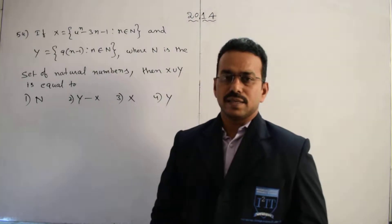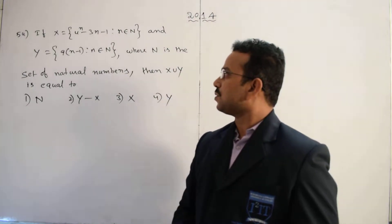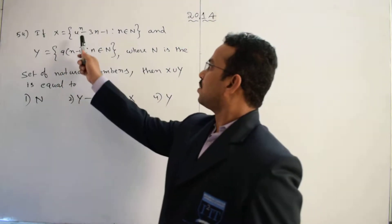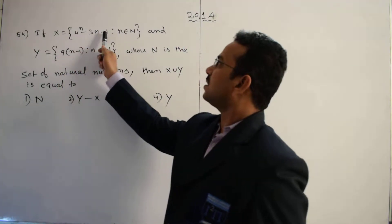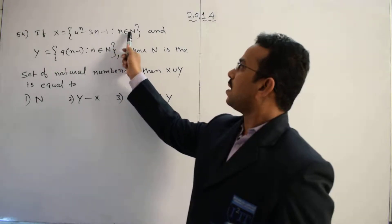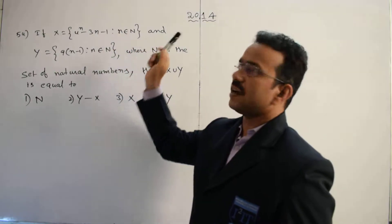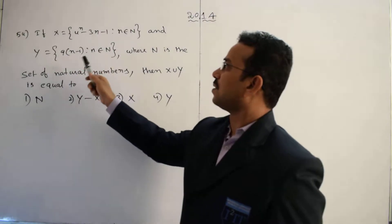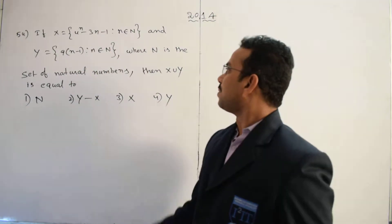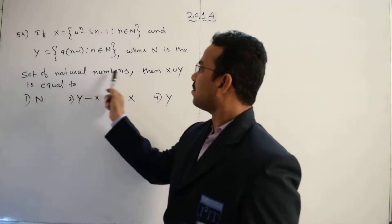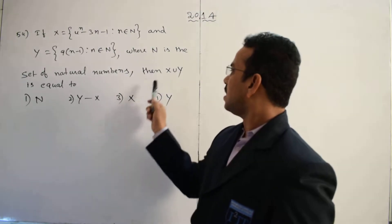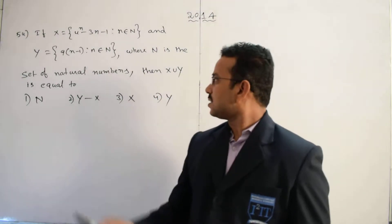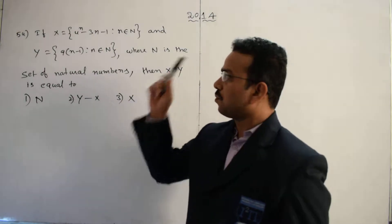Let's discuss the solution of the given question. Here the question is: if the set X equals 4^n minus 3n minus 1, where n belongs to the natural numbers, and the set Y equals multiples of 9, that is 9(n-1) where n belongs to the natural numbers, then find X union Y.